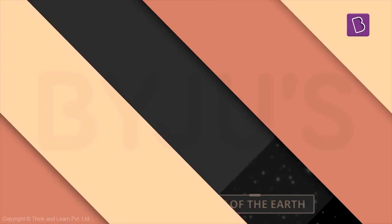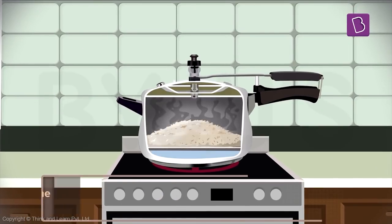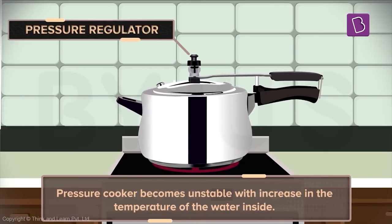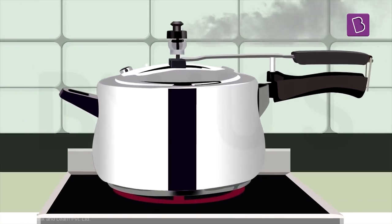You can say that the Earth is something like a pressure cooker. When you cook something at home in a pressure cooker, as the pressure increases it becomes very unstable. The weight that holds the pressure inside gets pushed out because of the pressure.